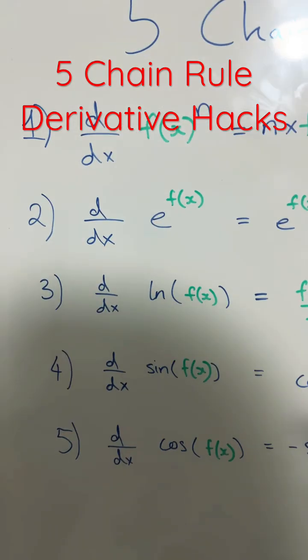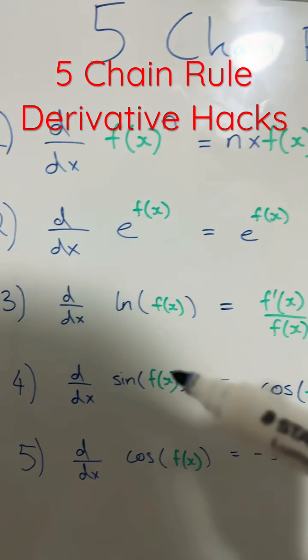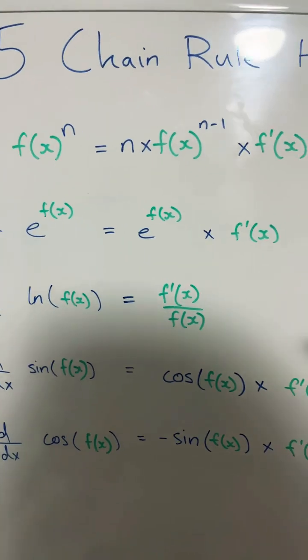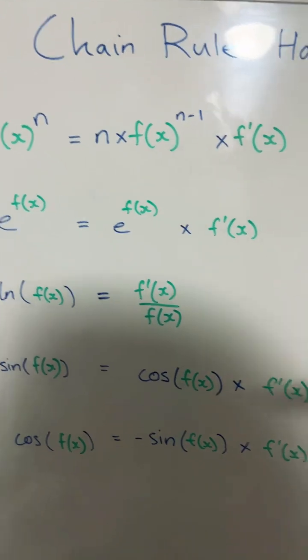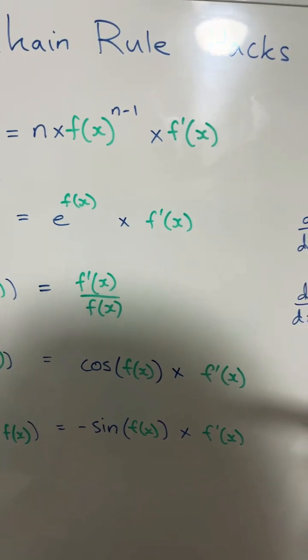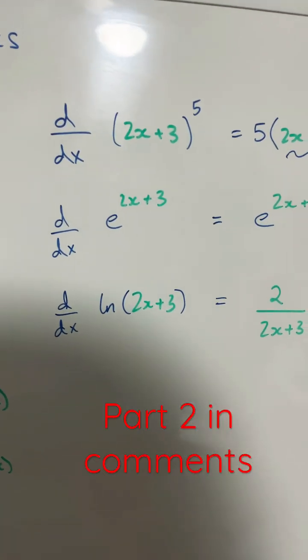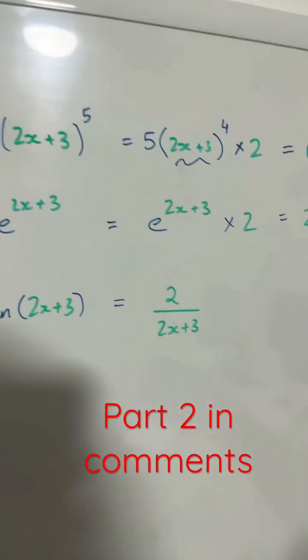Number 3: when deriving ln of f of x, the derivative is just f dash of x over f of x. So if you were deriving ln of 2x plus 3...